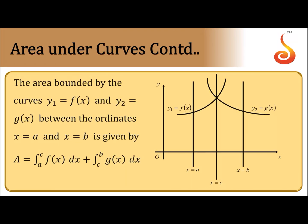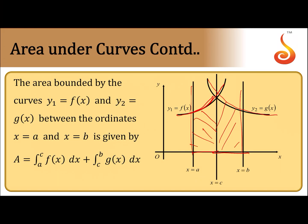Suppose y = f(x) is one curve and y = g(x) is another, both from x = a to x = b, and they intersect at x = c. We split the area into two parts: from a to c, the area under one curve, and from c to b, the area under the other. We calculate each portion separately and add them to get the total area.